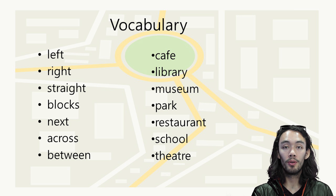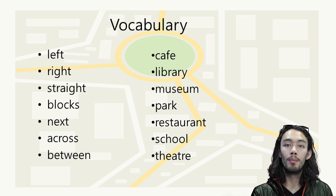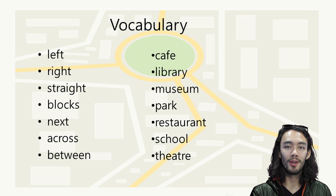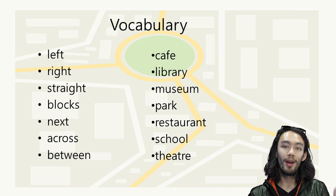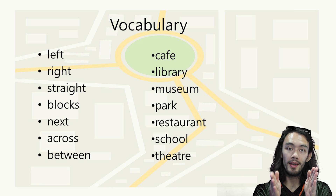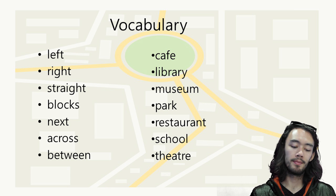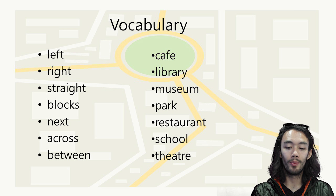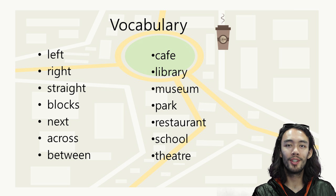We have a few words for our vocabulary. Most of these were from last week's video, so let's read through them: left, right, straight, blocks, next, across, between, and then we have cafe — so where you get coffee, for example.